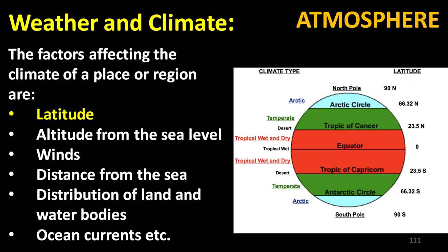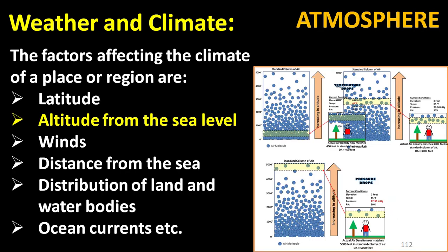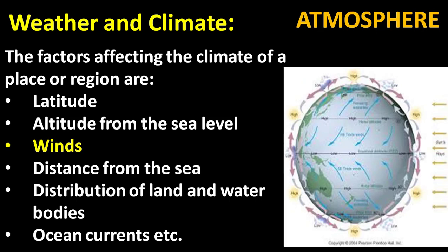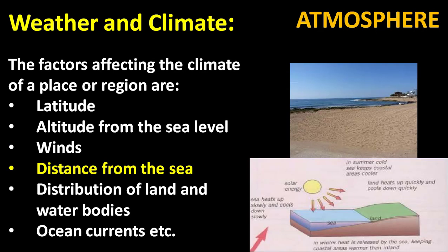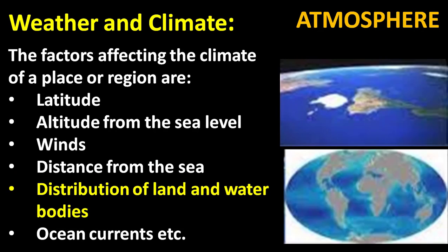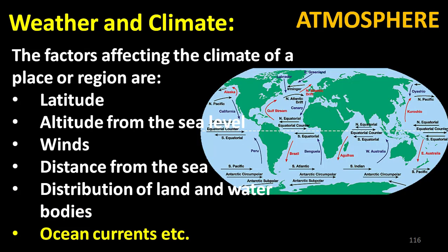The picture shows information about latitude. The second factor is altitude from sea level. The next is winds, then distance from the sea, distribution of land and water bodies, and ocean currents.